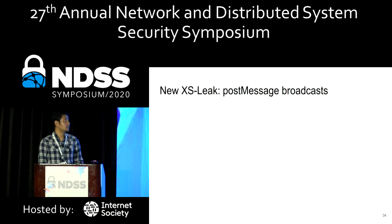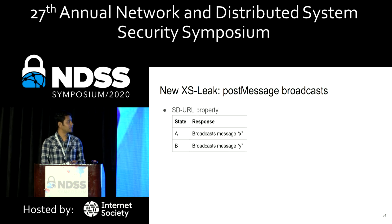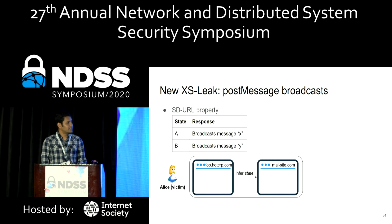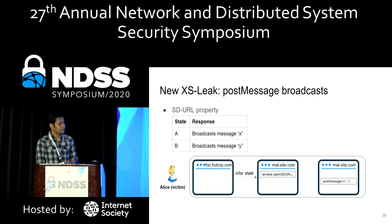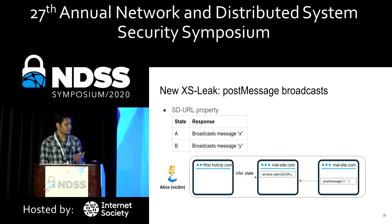Let's see how the postMessage-based attack class works. It applies when there is a state-dependent URL with the following property: when the user is in state A, the URL returns a response that broadcasts message X, and when the user is in state B, the broadcast message is Y. The malicious site can open the state-dependent URL and receive that broadcast message, allowing it to determine that Alice is in state A.